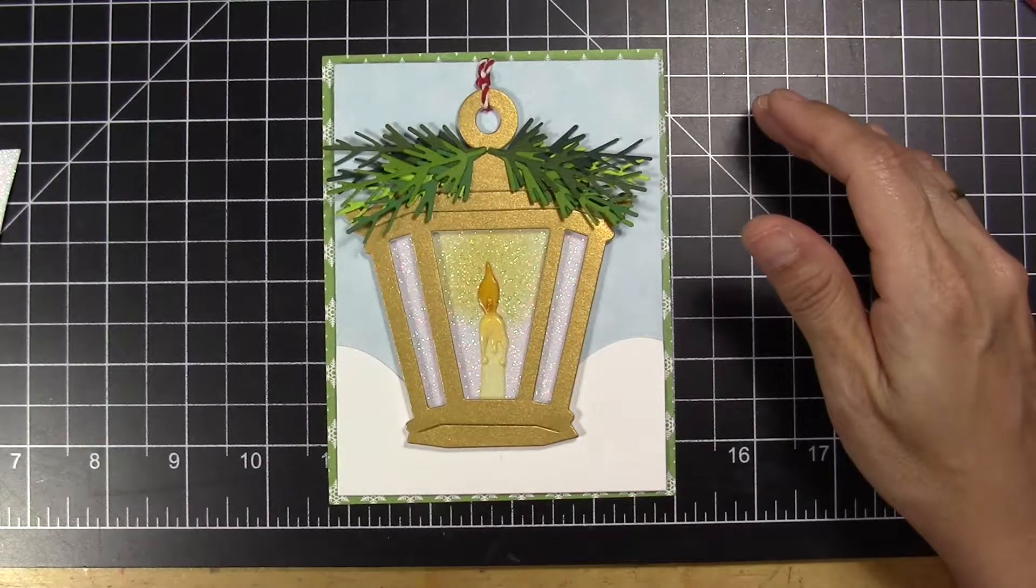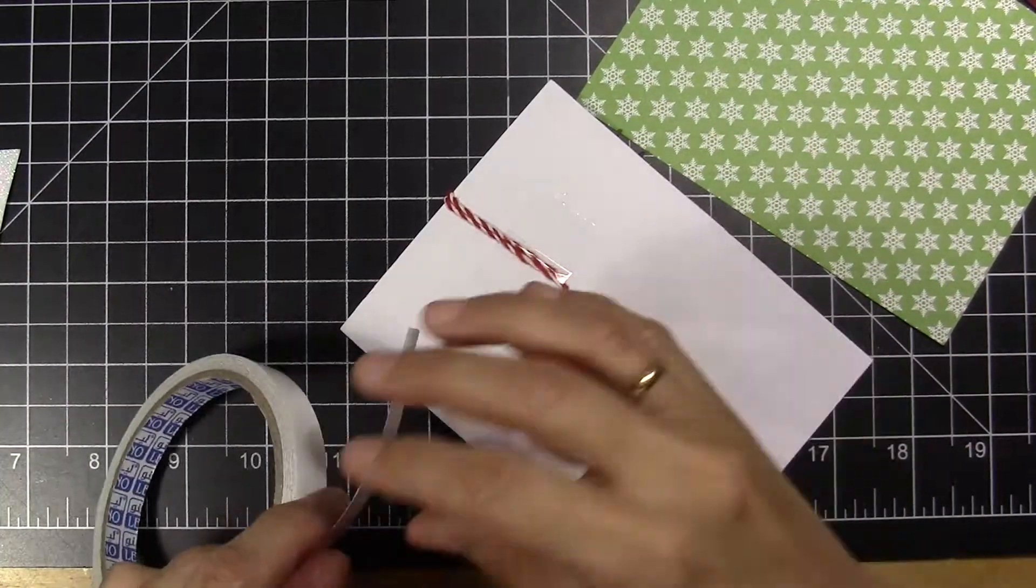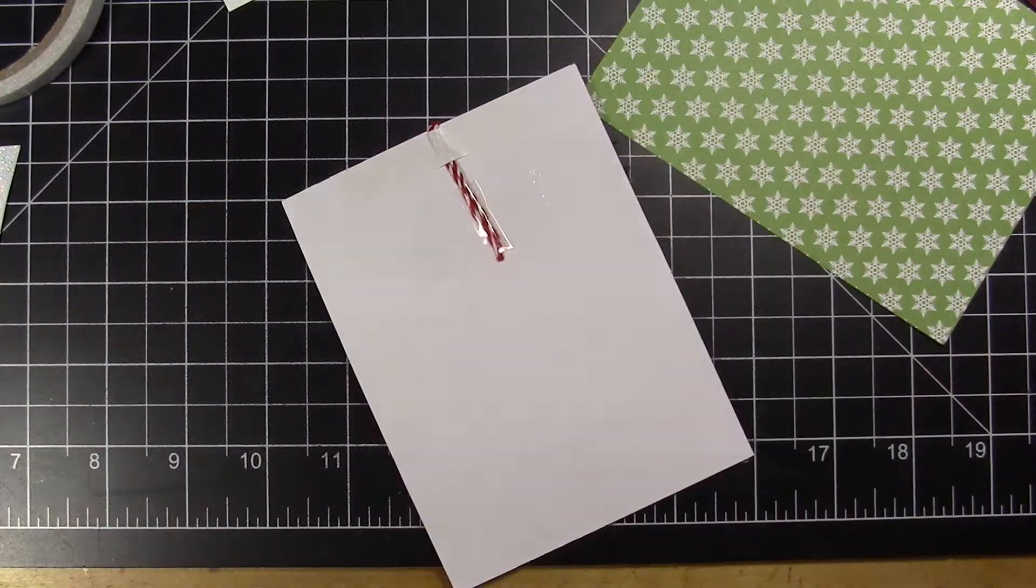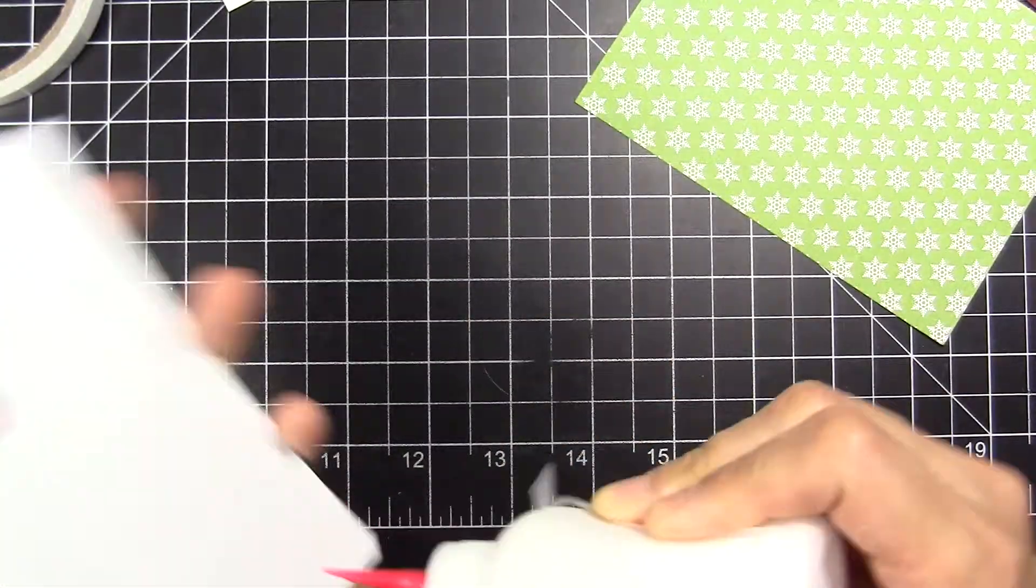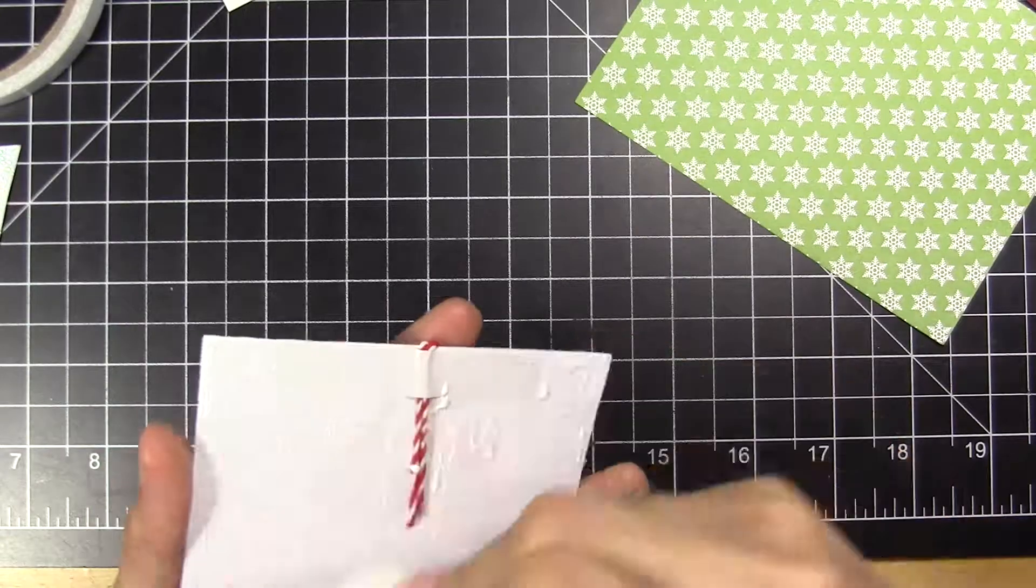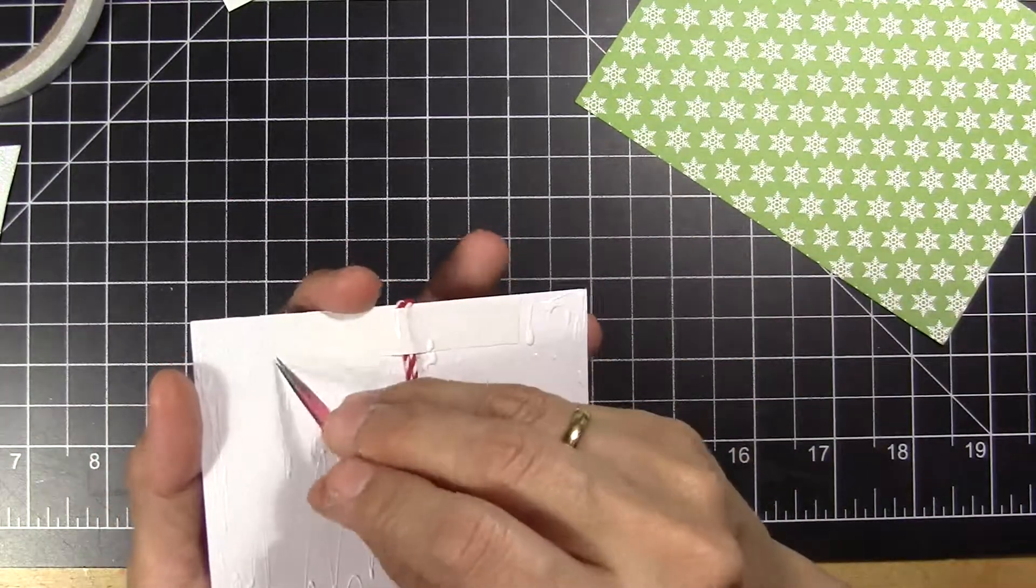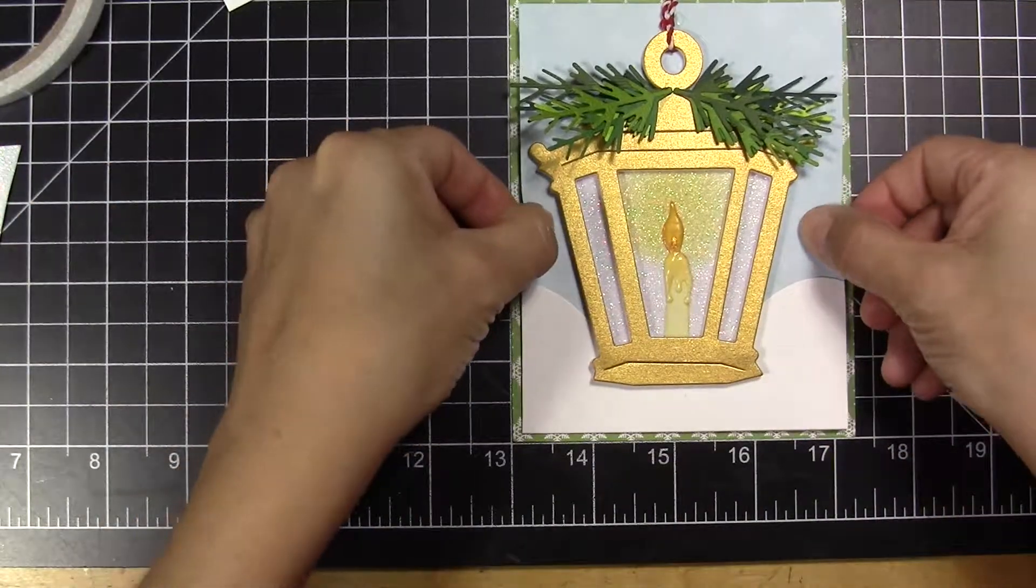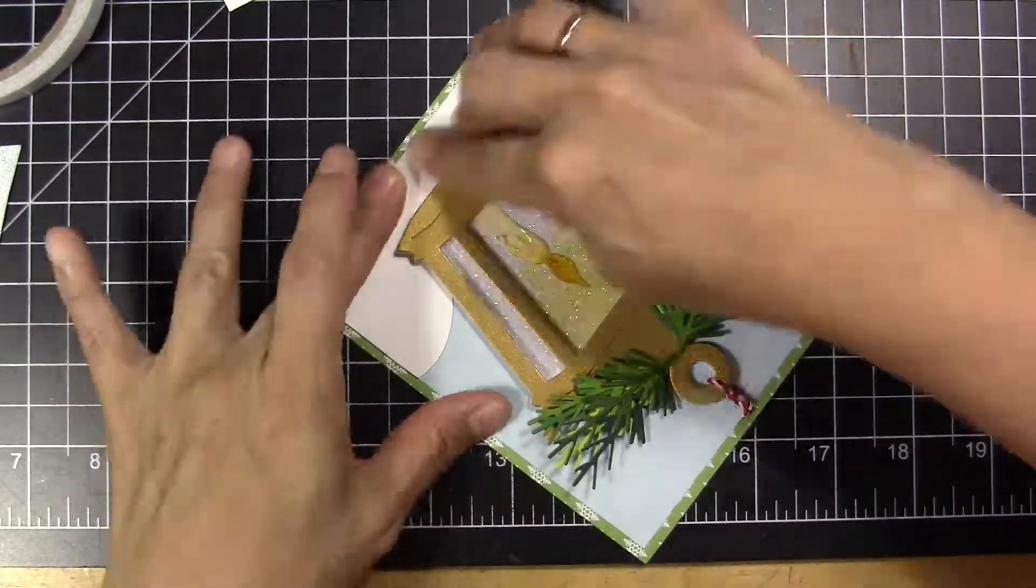I also cut a little bit bigger panel in green with a snowflake—that one is the normal size of the A2 card. The panel where the lamp is is a little bit smaller than the other one. I'm going to glue my panel to the other panel, and I'm going to add the bow.